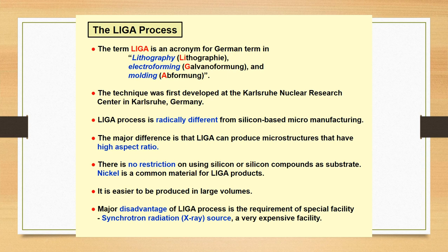The major disadvantage of the LIGA process is the requirement of a special facility known as synchrotron radiation x-ray source, which is a very expensive facility. Because we have to make deep trenches in the photoresist layer, the x-ray radiation required should be of high intensity and power. So instead of using a normal x-ray source, we have to switch to synchrotron radiation.